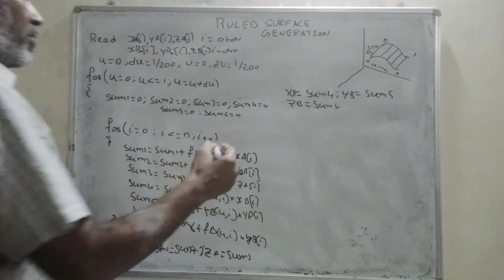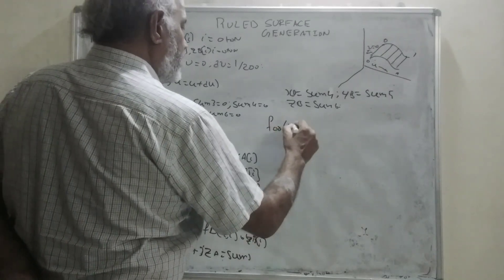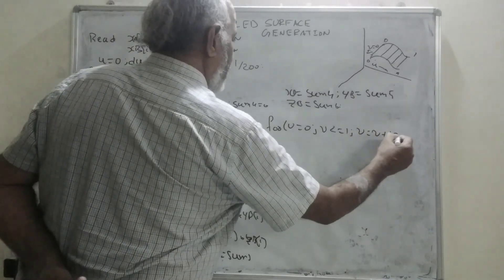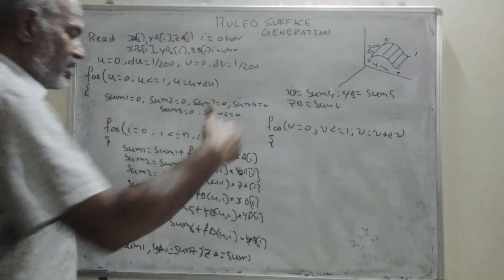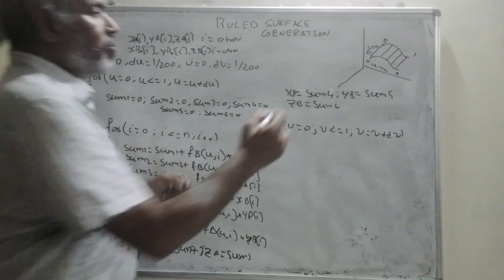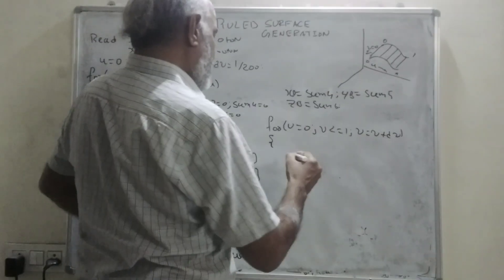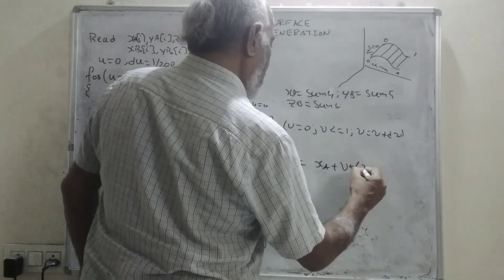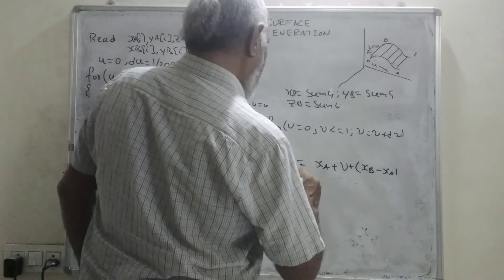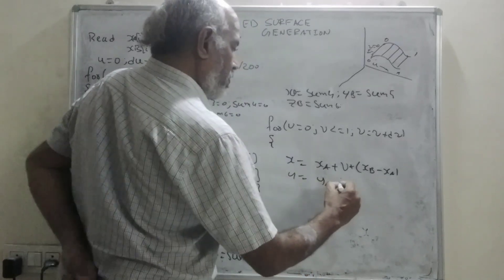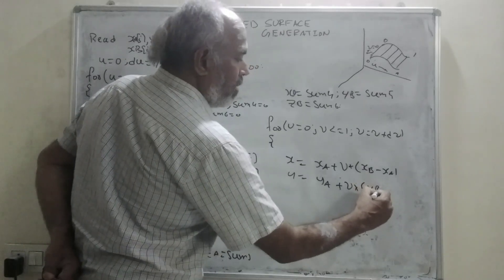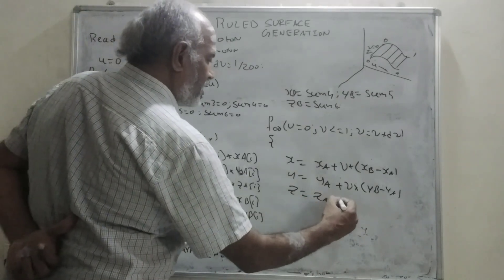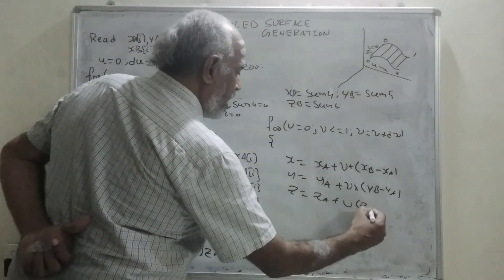Now, here in this again, I am going to write some other point loop for b equals 0, b less than or equal to 1, b equals b plus db. In this instance, I have got one point here and another point. Here x equals x_a plus b into x_b minus x_a. y equals y_a plus b into y_b minus y_a. And z equals z_a plus b into z_b minus z_a.